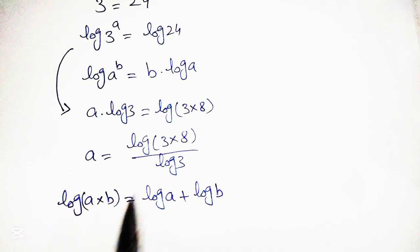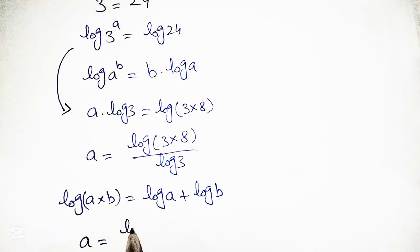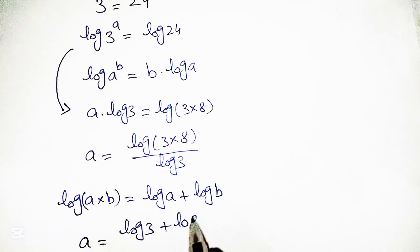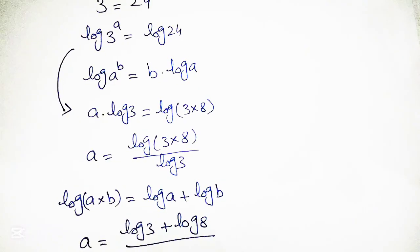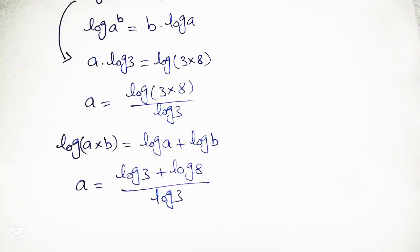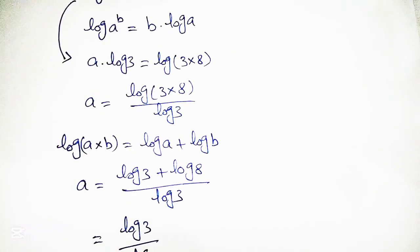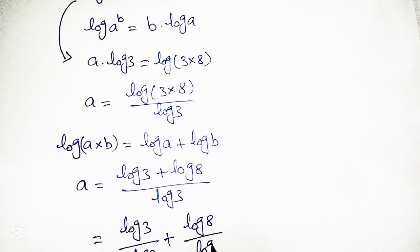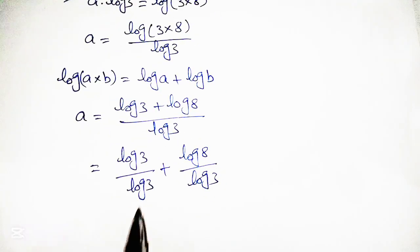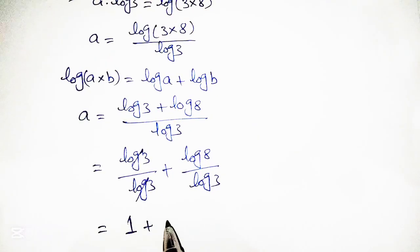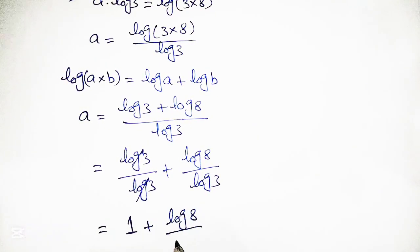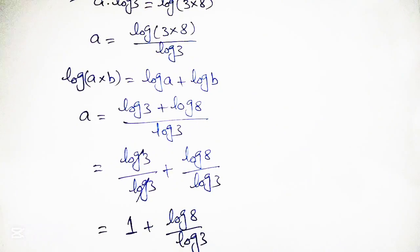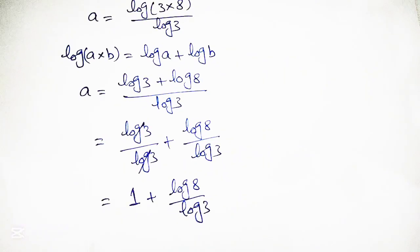Using this formula, we rewrite it as a is equal to log of 3 plus log of 8, all over log of 3. We can split this as log of 3 over log of 3 plus log of 8 over log of 3. The log of 3 over log of 3 cancels out, giving us 1 plus log of 8 over log of 3.